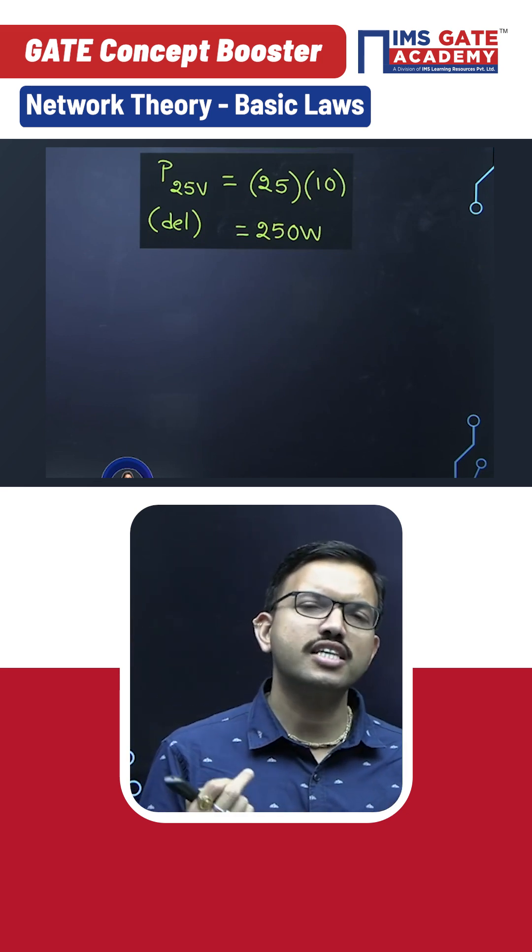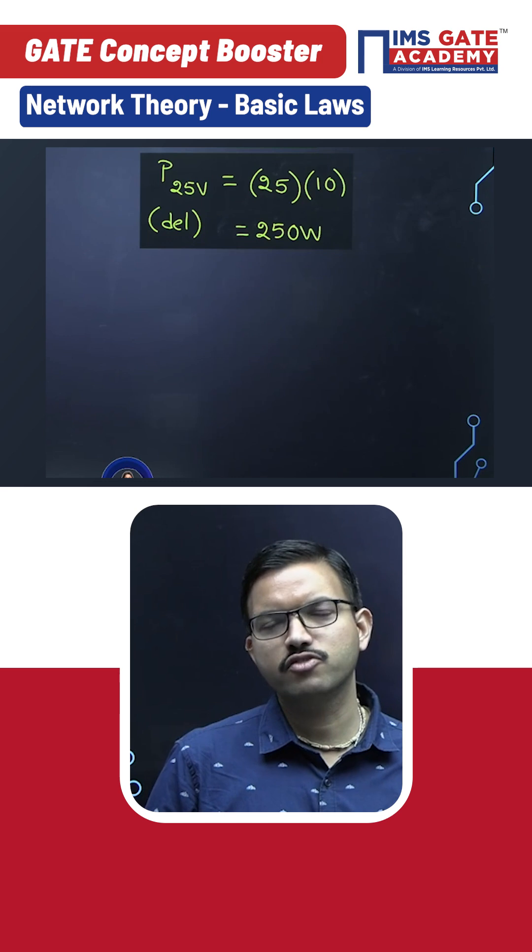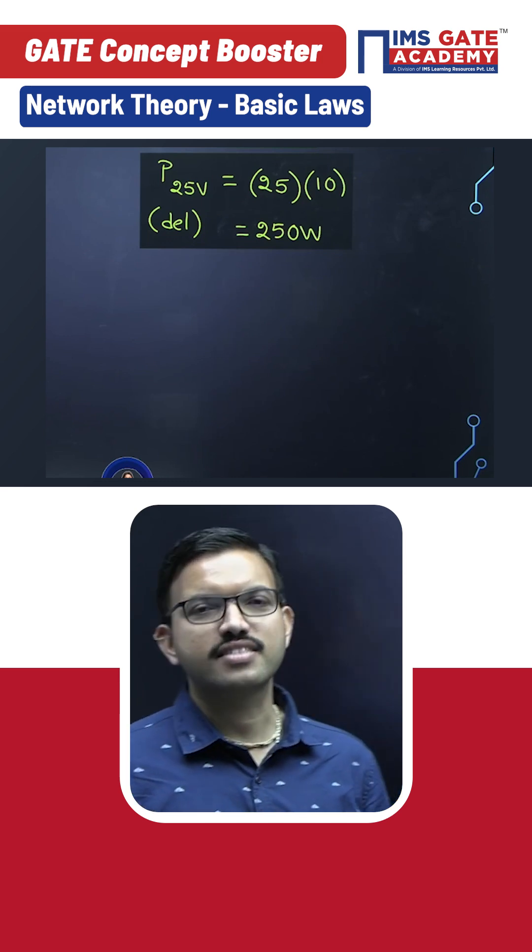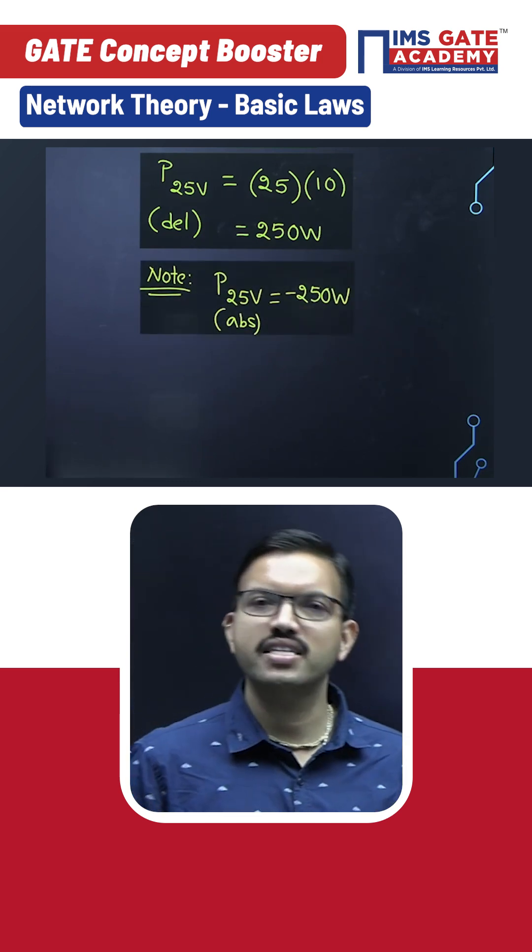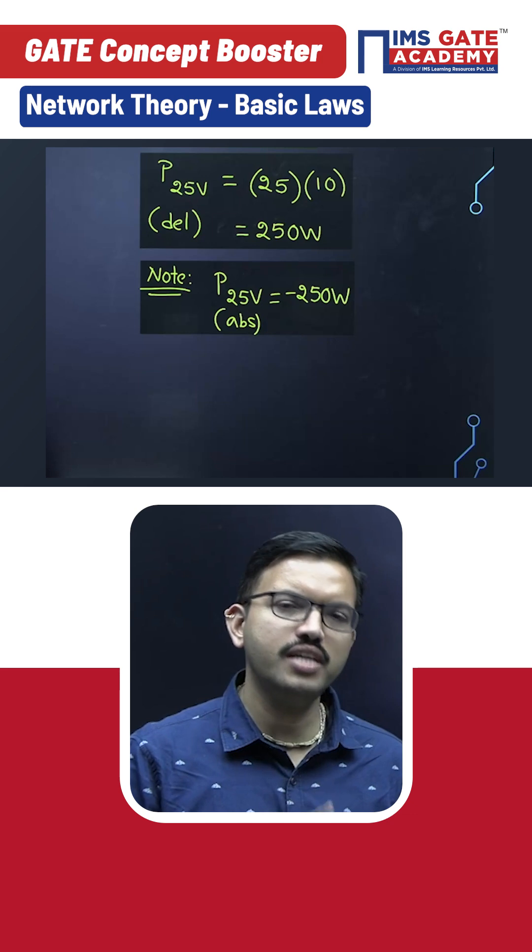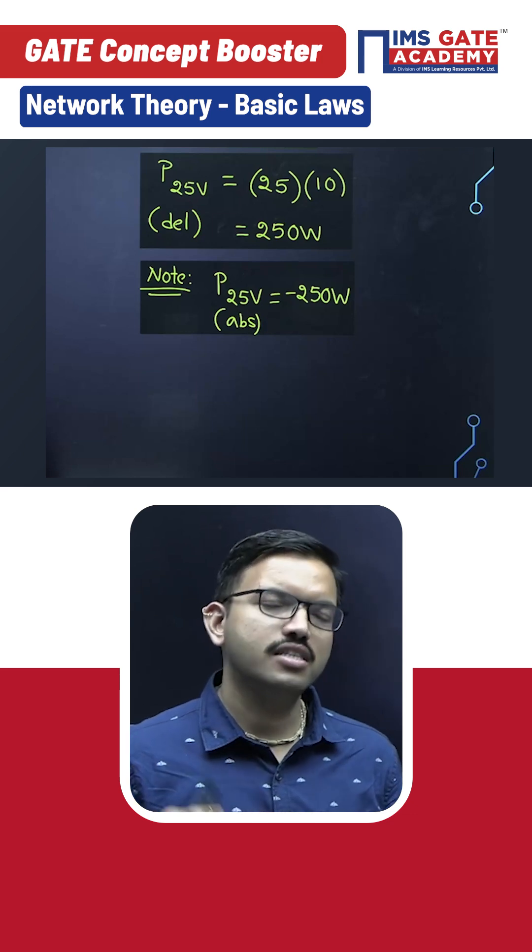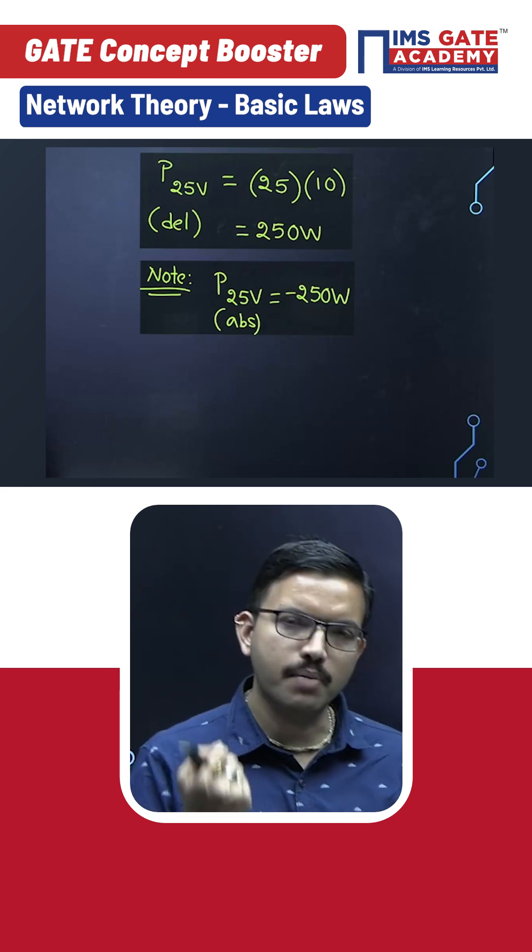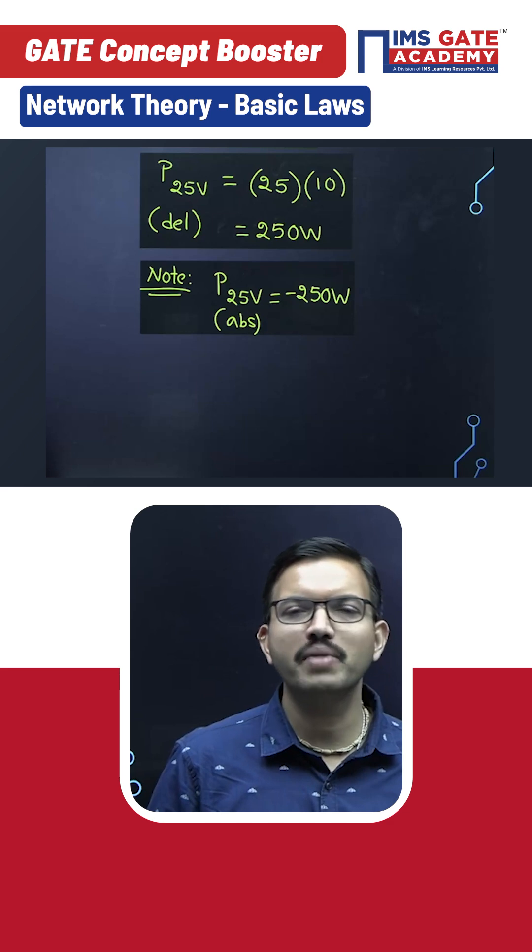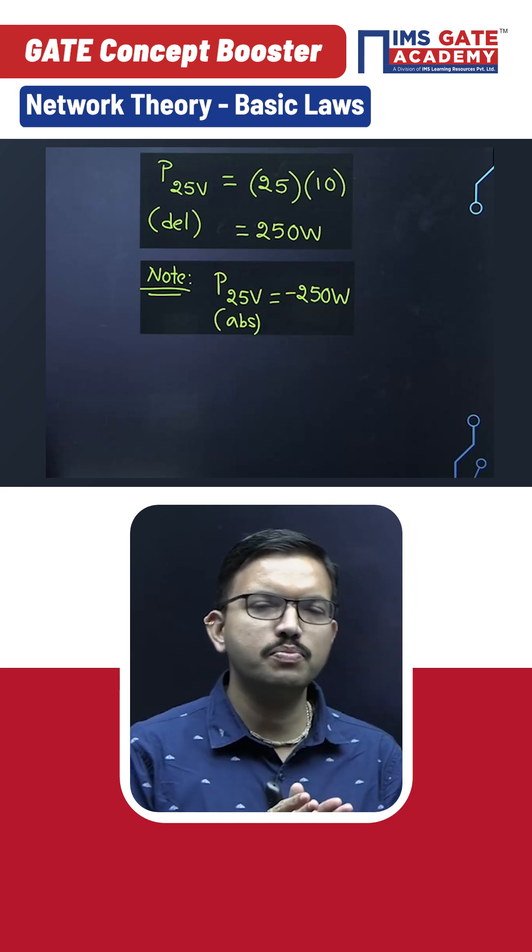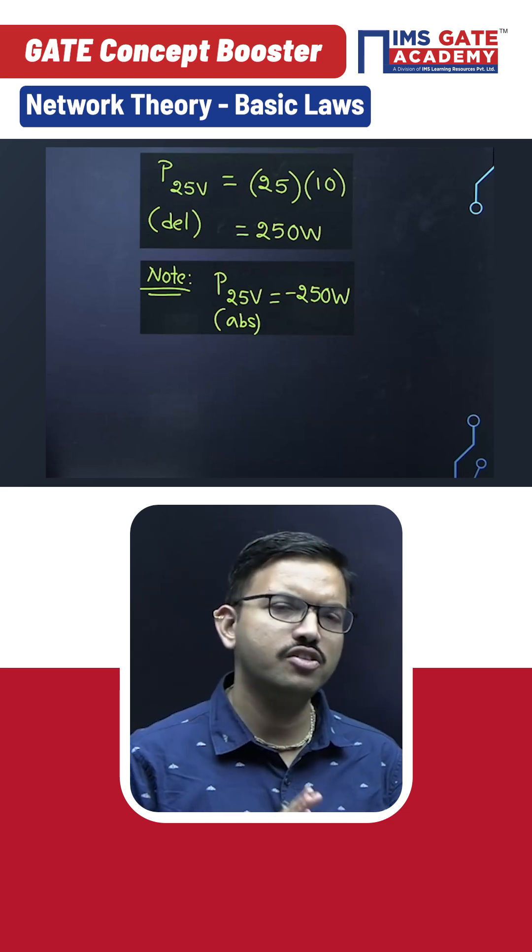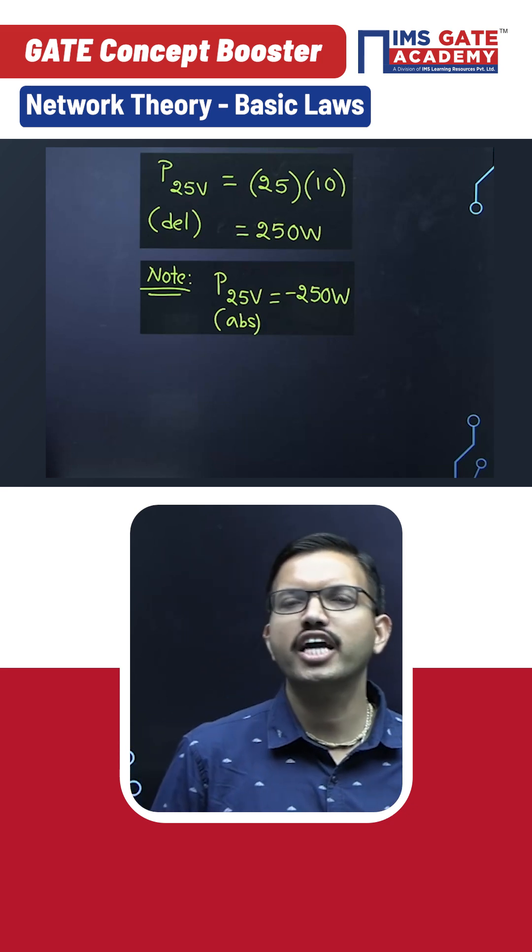Suppose interestingly, intentionally, if they ask instead of power supplied by the 25 volt source, if they're asking power absorbed by the 25 volts, then what will be the answer? Yes, you have to put minus sign. Whatever that actually the element is delivering, if they ask how much power absorbed by that element, you have to mention minus sign. That means if earlier value is positive, now it will become negative. If earlier value is negative, now it will become positive.